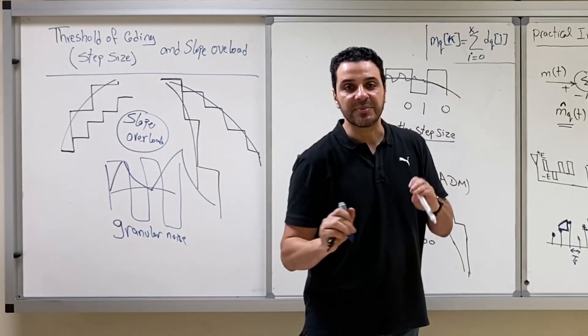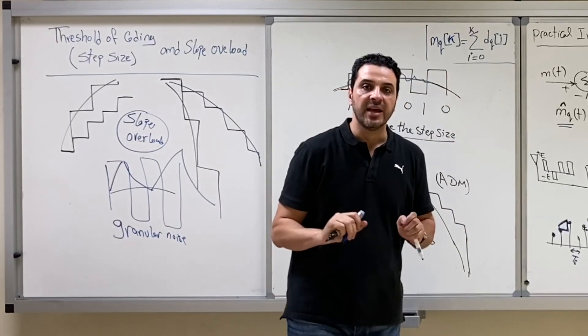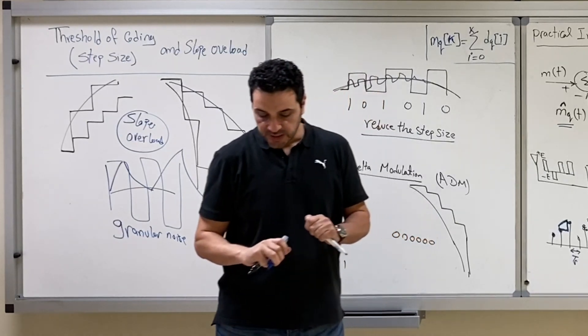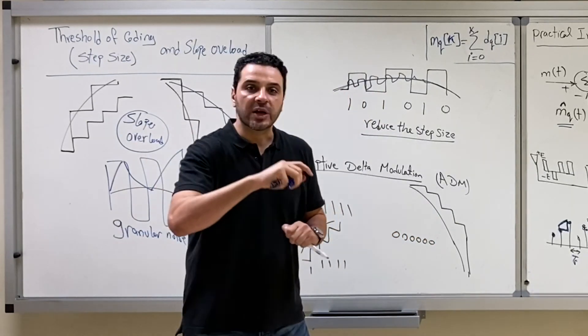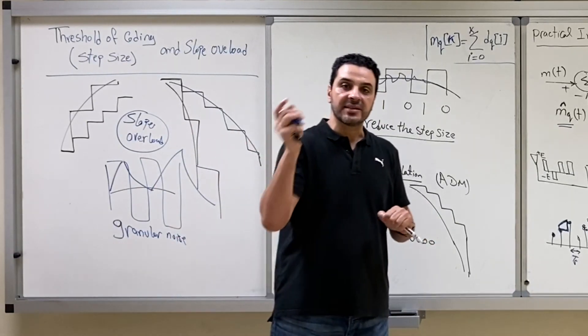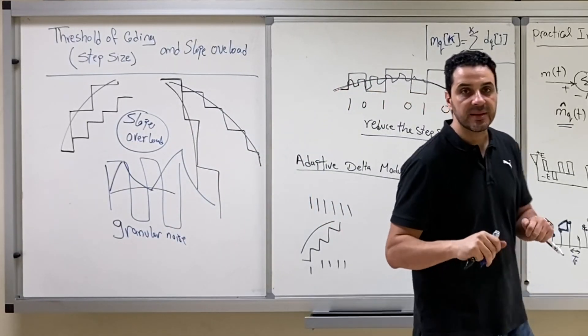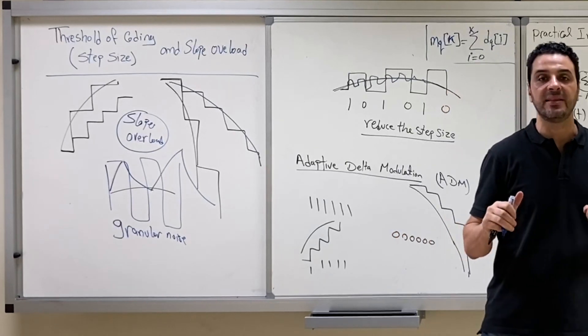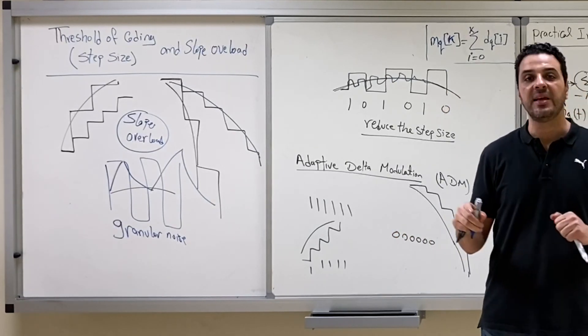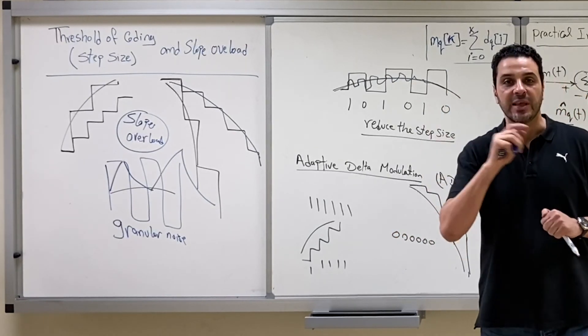So this is basically adaptive delta modulation. In the next video I'm going to discuss another practical problem that happens with delta modulation. See you in the next video.